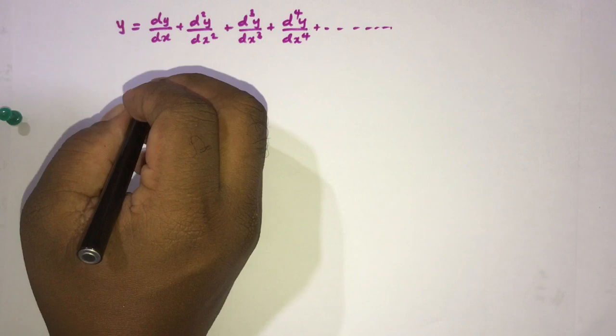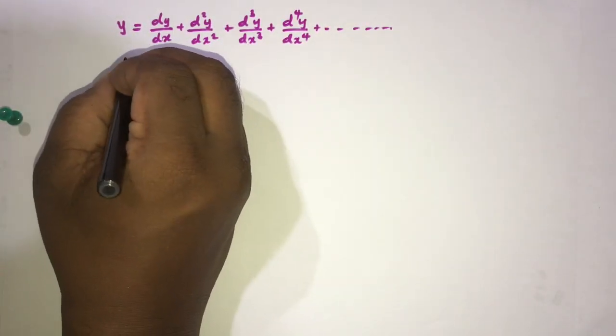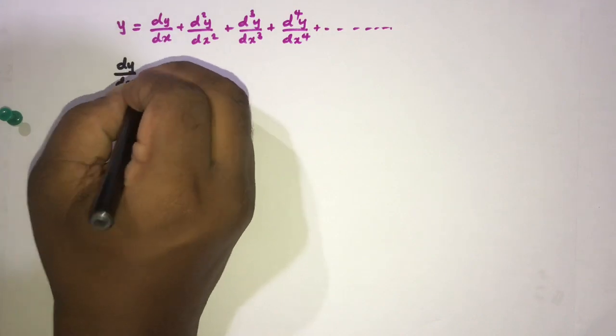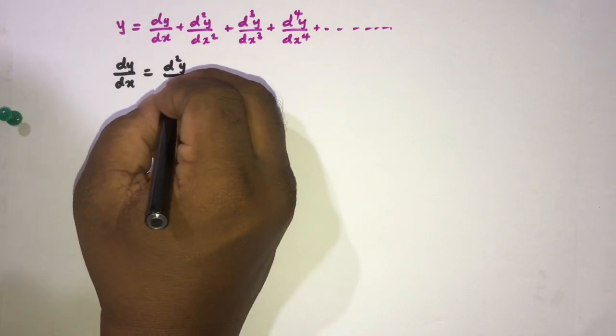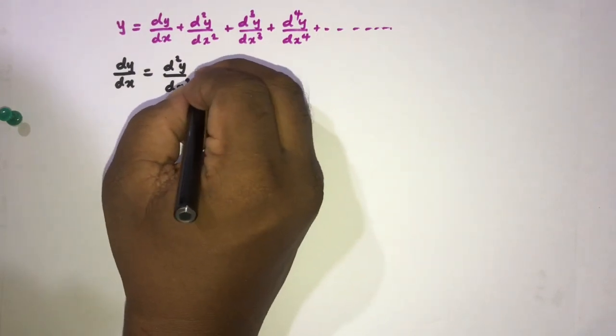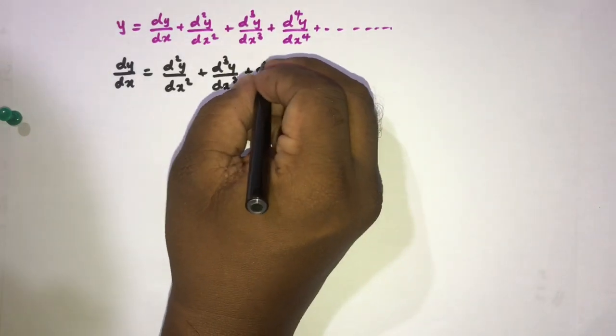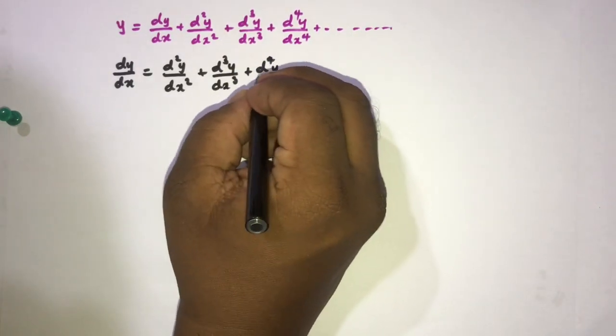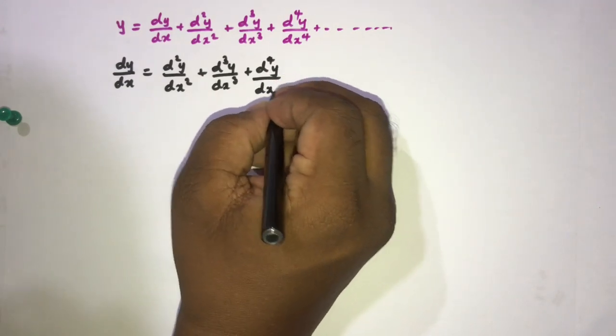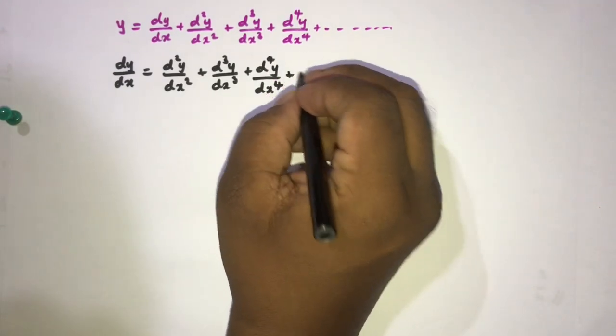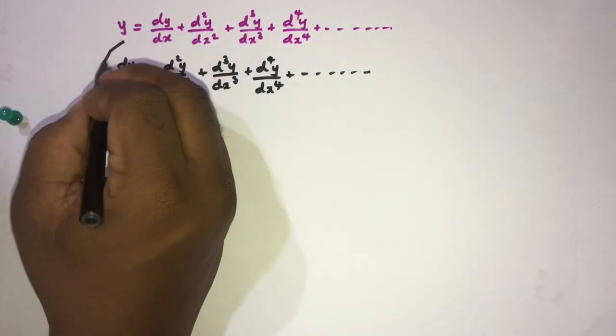First, if we take the derivative of both sides with respect to x, we can write dy by dx is equal to d square y over dx square plus d cube y over dx cube plus d to the fourth power y over dx to the fourth plus so on.